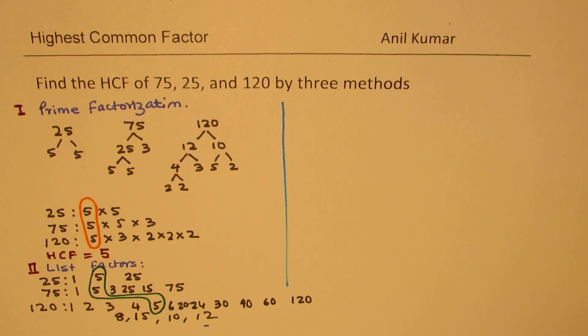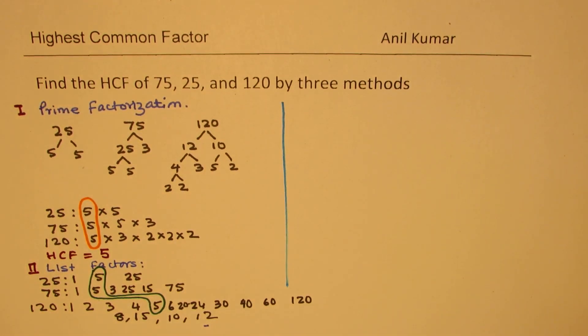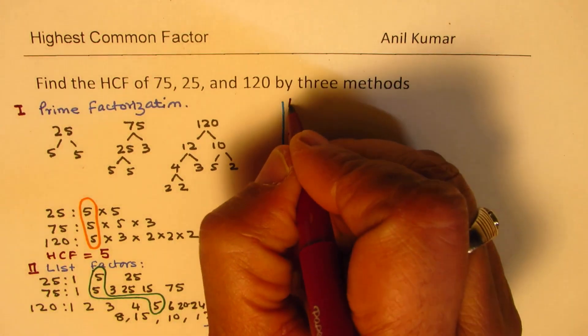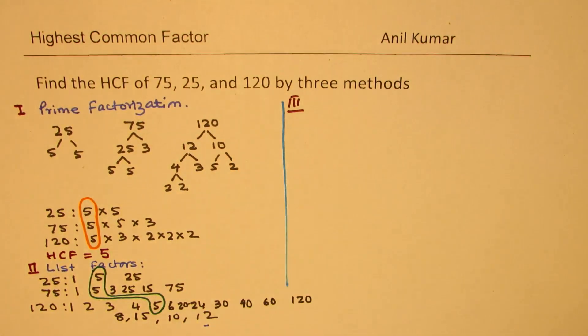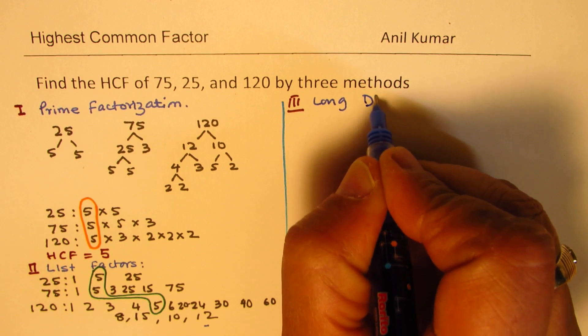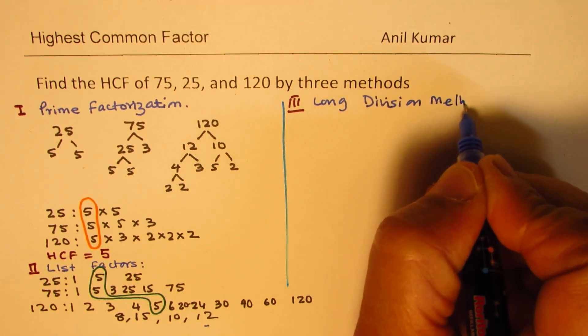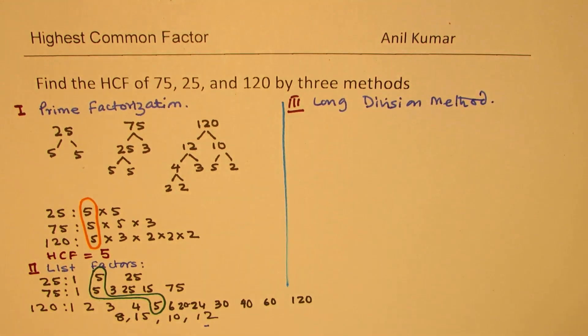Now, here is the method which is the long division method. So, let us see how to use long division to find common factor and the highest common factor. In this method, we need to divide one number by the other.